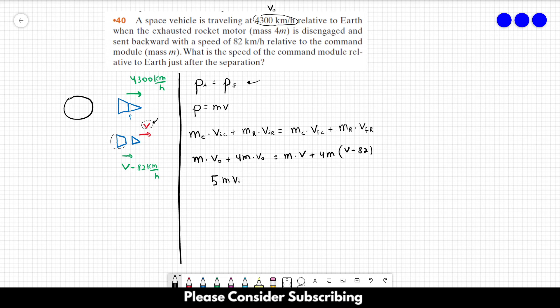Okay, so on this side of the equation we have 5 times m v₀, which is equal to m v plus 4m times v minus 4 times 82, that's 328m. This is 5m v as well, so let's keep going: 5m v₀ equals 5m v minus 328m.